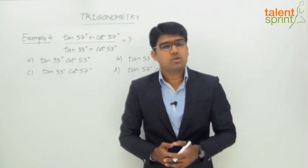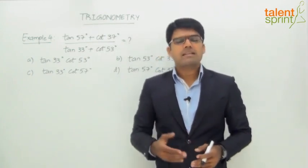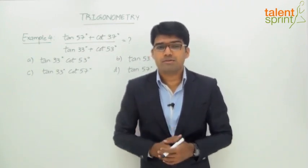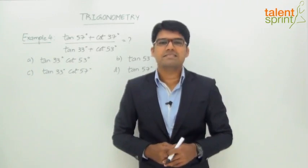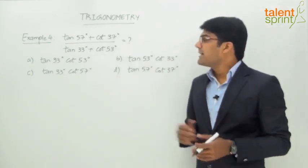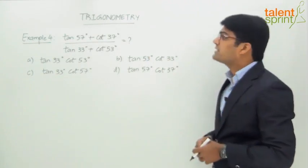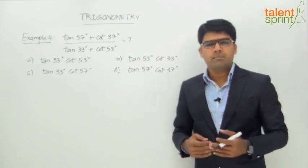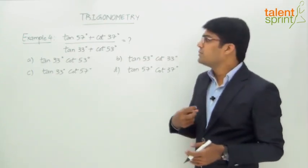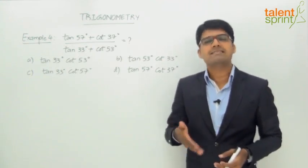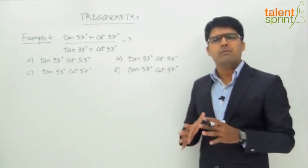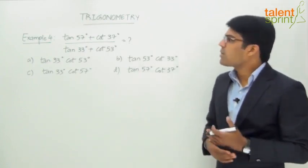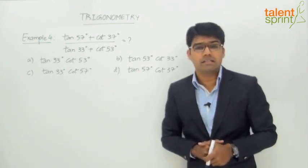Let's take our next example, which is also based on converting one type of trigonometric ratio into another to arrive at the required answer. This question is from the earlier SSC CGL exam. The question is: tan57 + cot37 upon tan33 + cot53 equals what? Note that all numerical values represent degrees.